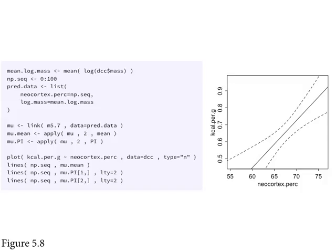You pass the predicted data into link for model M5.7, which has both predictors. It computes predictions, we summarize them to get the mean and percentile interval, and then the plotting is just as you'd expect — using lines rather than those nice fashionable shapes. It's that easy.